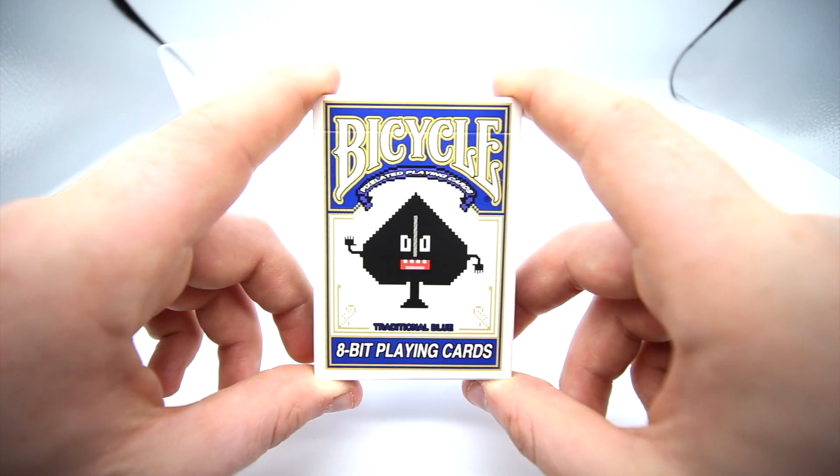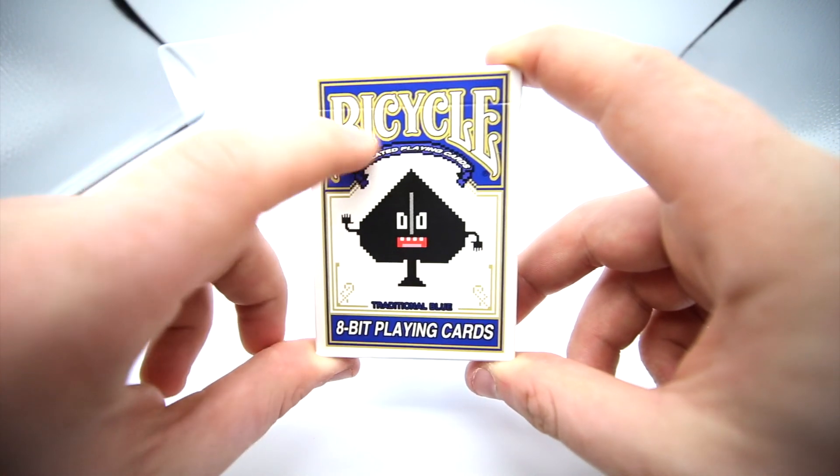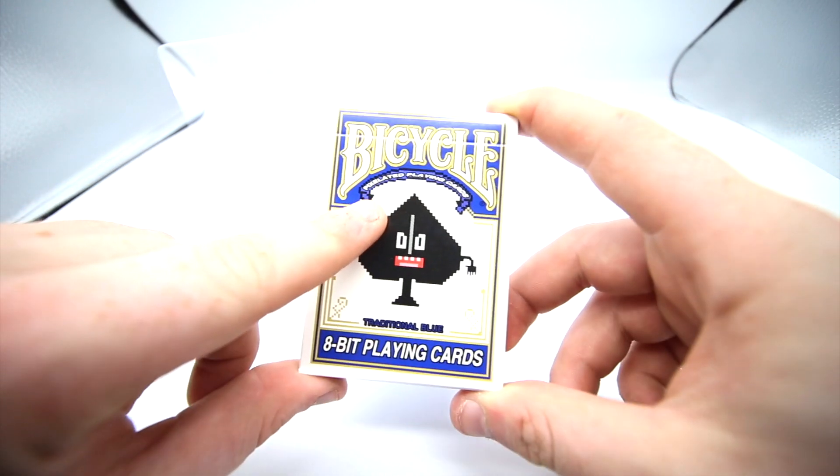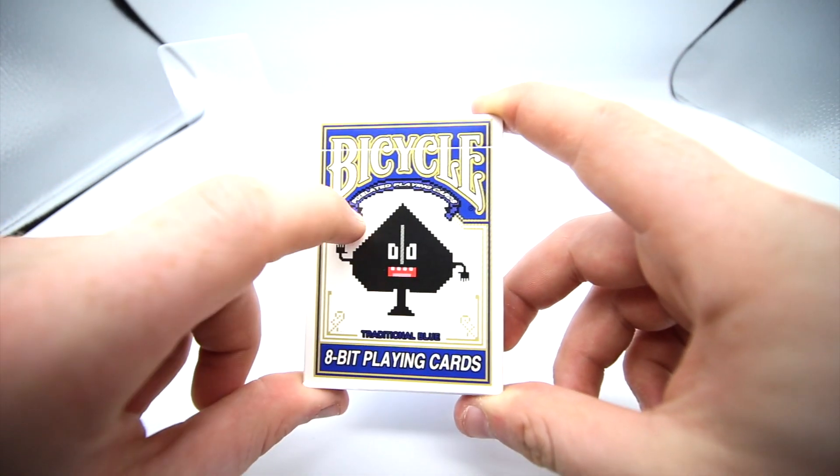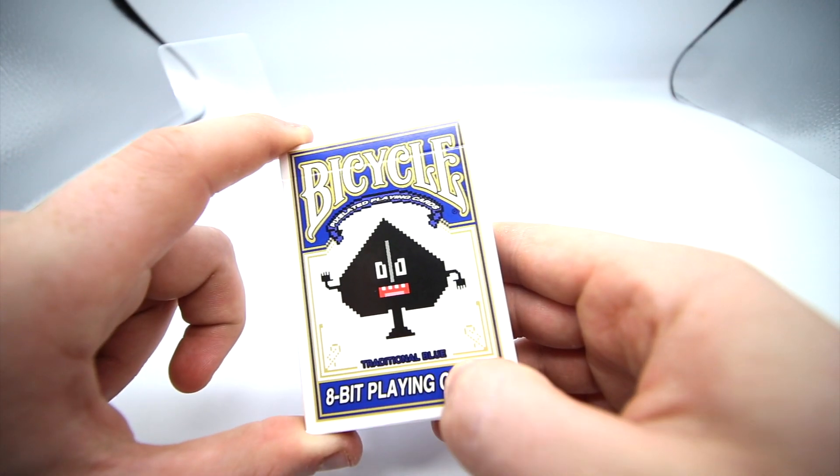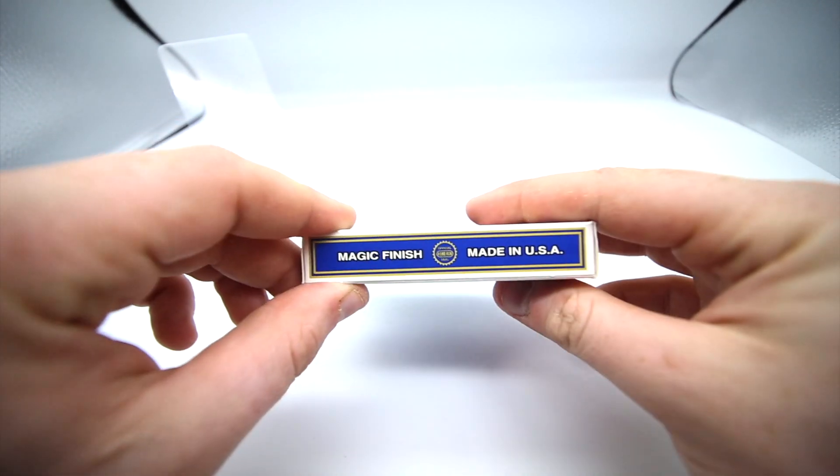On the front it has Bicycle in yellow and black text. It's got the 8-bit logo there, and as you can see it has pixelated playing cards because obviously 8-bit and 32-bit stuff has that pixelated look. Then it has traditional blue on the other side.